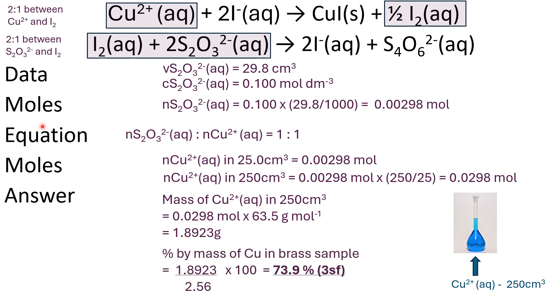To get the percentage by mass of copper in the brass sample, divide that by the original mass of brass, which is 2.56 grams, and express it as a percentage by multiplying by 100, which gives us 73.9% to three significant figures.